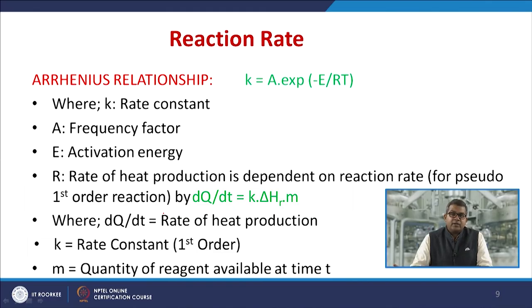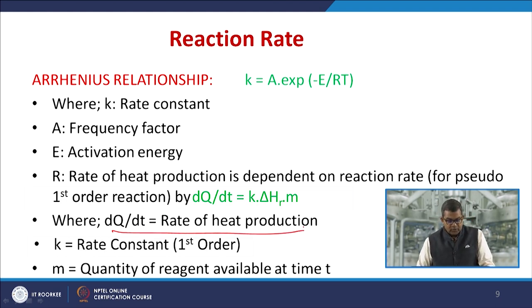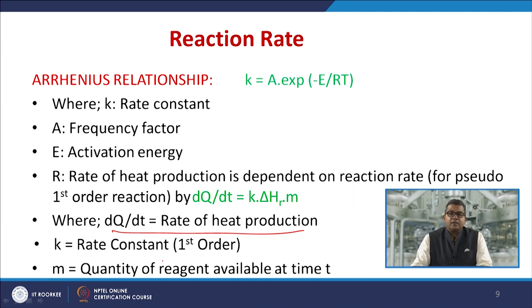Another aspect is the reaction rate, attributed to the Arrhenius relationship: k = A·e^(−Ea/RT), where k is the rate constant, A is the frequency factor, and Ea is the activation energy. The rate of heat production for a pseudo-first-order reaction is dQ/dt = k·ΔHᴿ·m, where dQ/dt is the rate of heat production, k is the first-order rate constant, and m is the quantity of reagent available.